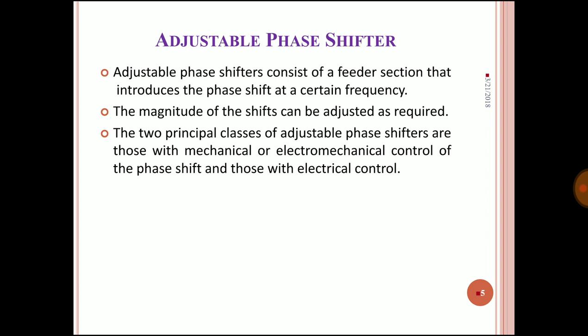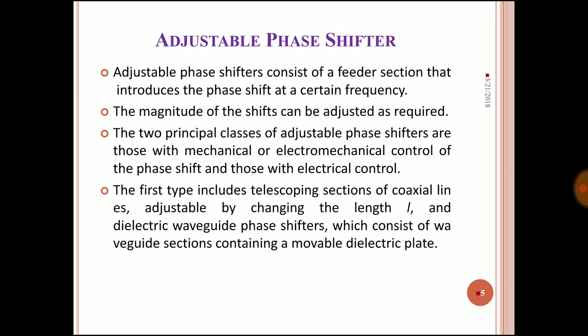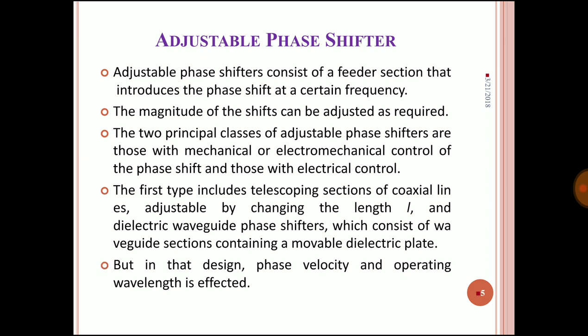The two principles are: mechanical or electromechanical control of phase shift, and electrical control. In the first category, it includes telescopic sections of coaxial lines where adjustable control is done by changing the length L. There is also the dielectric wavelength phase shifter, which consists of waveguide sections containing a movable dielectric plate. With a movable dielectric plate, both phase velocity and operating wavelength are affected.